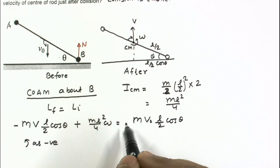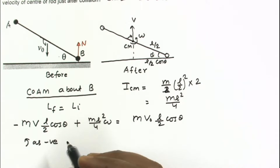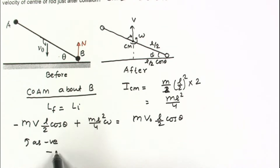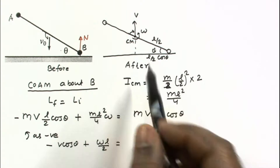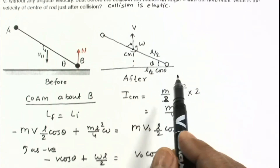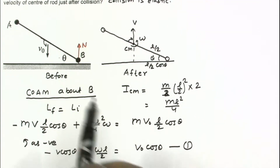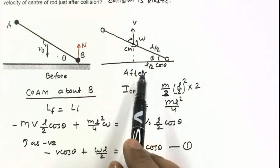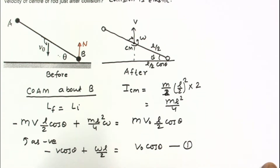After cancelling m and l, the simplified Equation 1 is: −v·cosθ + ω·(l/2) = v₀·cosθ. For the second equation, we have two unknowns v and omega. Since the collision is elastic, we have two choices: conserve kinetic energy, or use the condition that velocity of separation equals velocity of approach. To avoid dealing with squared velocities, we prefer the separation-approach equation.